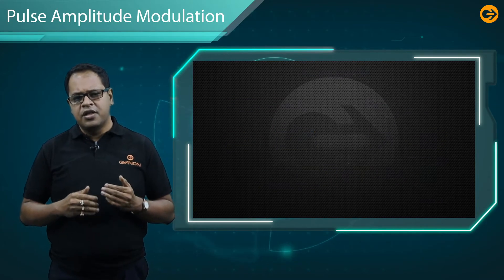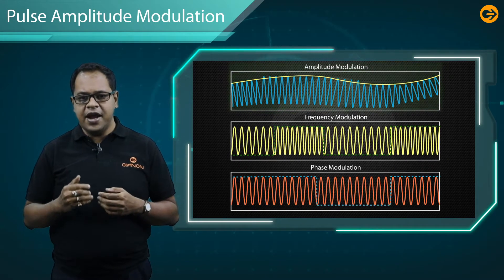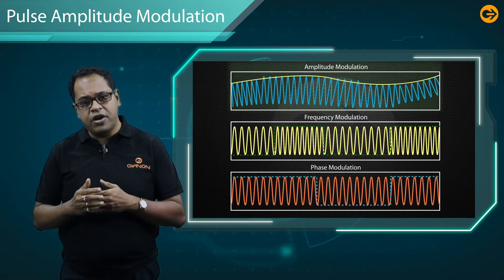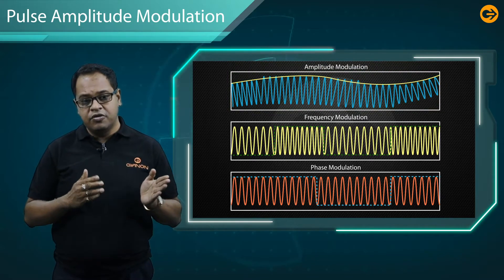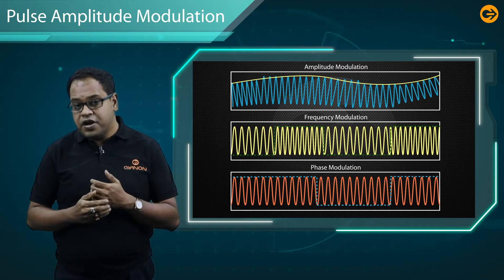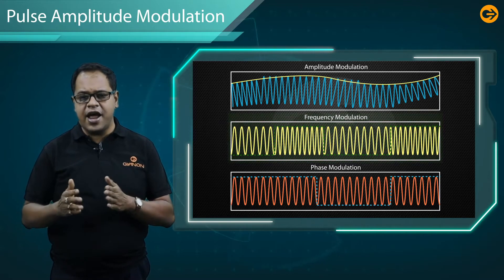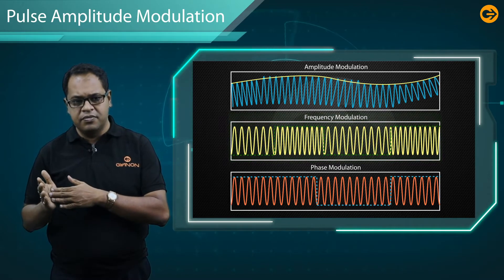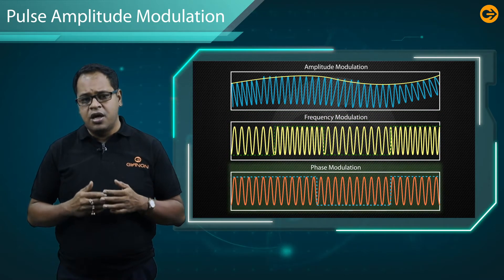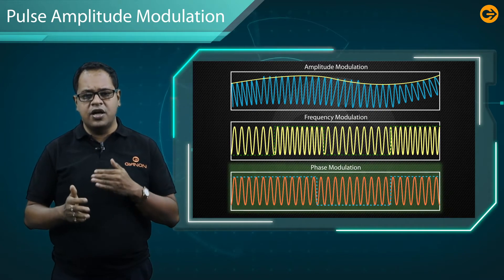In Amplitude Modulation, the carrier amplitude is varied according to the message signal. In Frequency Modulation, the carrier frequency is varied according to the message signal. In Phase Modulation, the carrier phase is varied according to the message signal.